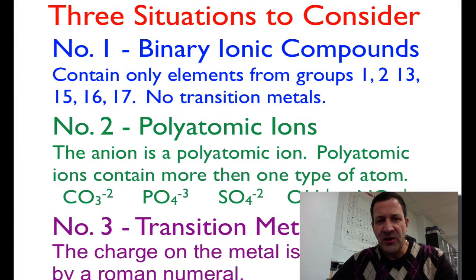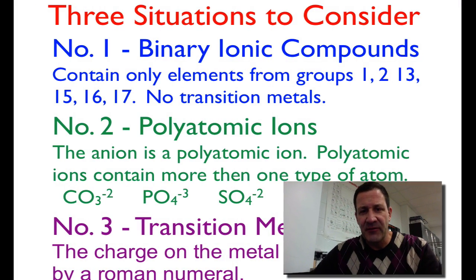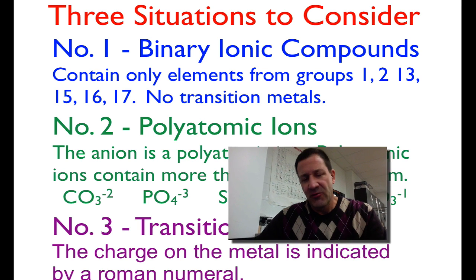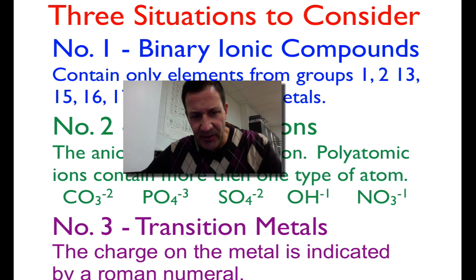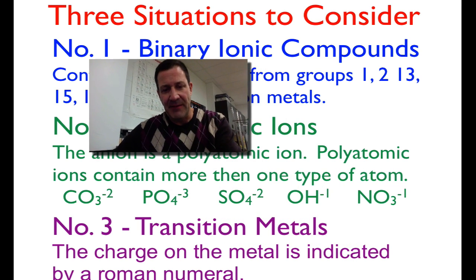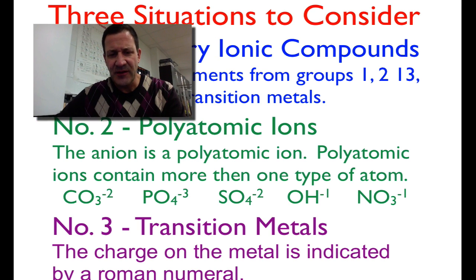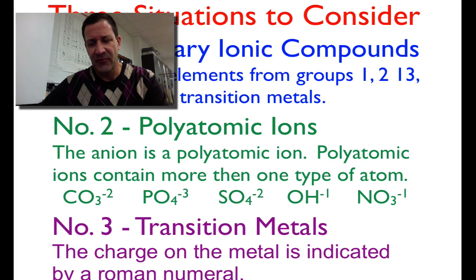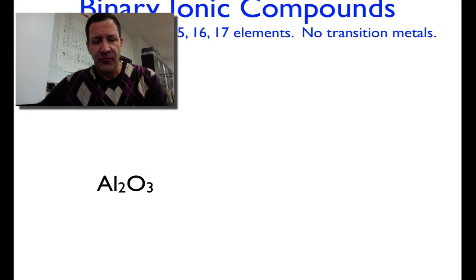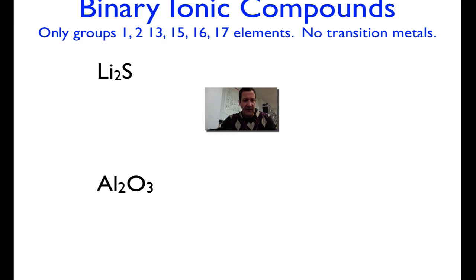There are three situations we have to consider. We have the binary ionic compounds, which are the regular ionic compounds. There are the polyatomic ones, which include polyatomic ions, so you need to know the names of those. And then there are the transition metals — it's important to know that the charge on the metal has to be written as a Roman numeral directly after the name of the metal.